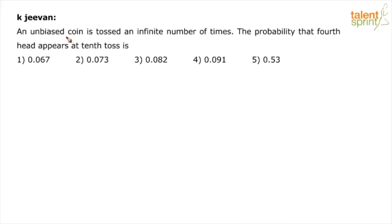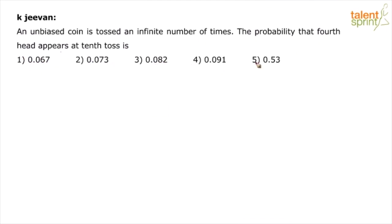An unbiased coin is tossed an infinite number of times. The probability that the fourth head appears at the 10th toss is — options given: 0.067, 0.073, 0.082, 0.091, 0.53.